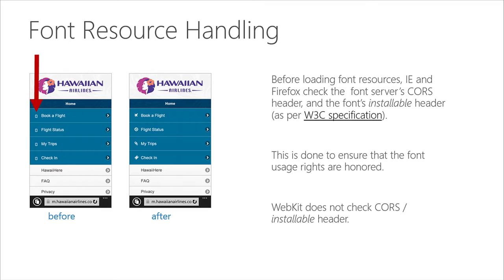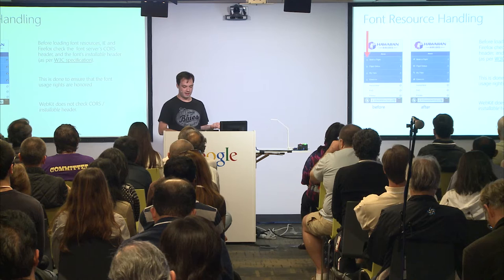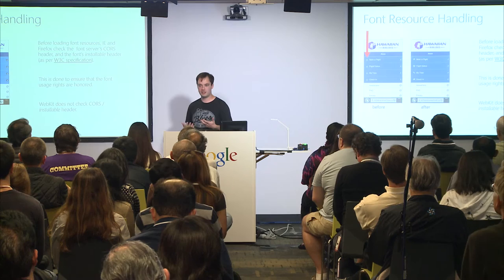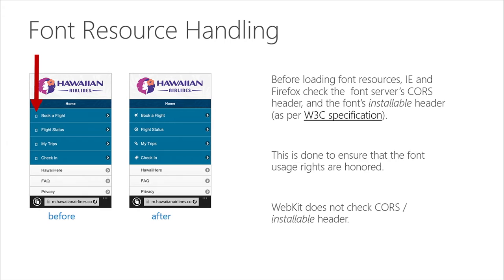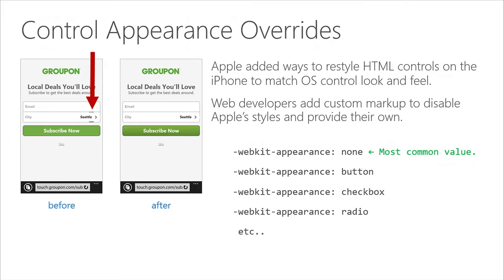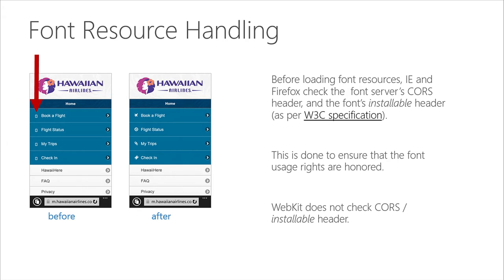Font resource handling is a good example. The W3C spec at the time required that fonts served cross-origin had to have a CORS header. IE actually implemented this, but it turned out other browsers didn't — which meant they were allowing fonts to load that the spec said you weren't allowed to load. This caused problems like the Hawaiian Airlines site showing no icons next to their menus. So we relaxed this to be interoperable, and the specs are starting to change around this as well.